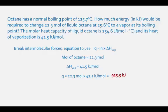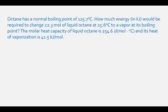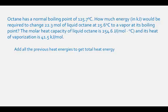The total amount of heat required to change 22.3 moles of octane from 25.6 degrees Celsius to a vapor at its boiling point is the total of all heat energies calculated: 568.3 kilojoules plus 925.5 kilojoules, which equals 1493.8 kilojoules of heat energy, or 1490 kilojoules to three significant figures.